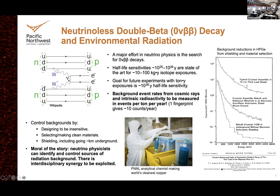Because it's so rare, you have to control background events to the level of one count per ton of material per year — and you have to expose tons of the stuff. For reference, if you're not used to thinking about how radioactive everything in the world is: one fingerprint gives you 10 counts per year. One fingerprint anywhere on your detector completely ruins your ton-scale experiment.